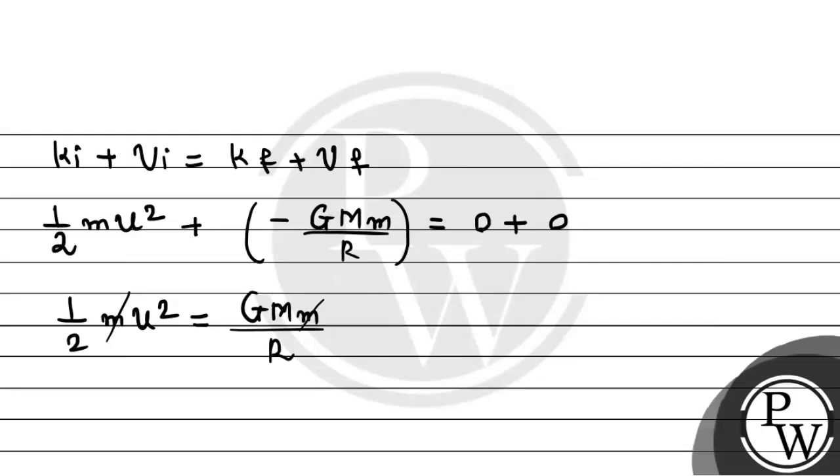So m will cancel out. We need to find the value of u from here. So u squared, this must be equals to GM divided by R, and then multiply by 2. Or taking roots on both sides, we'll get the required expression for u equals to square root of 2GM by R.